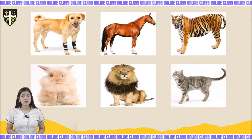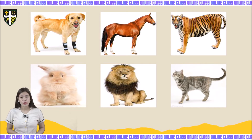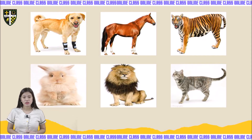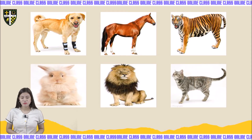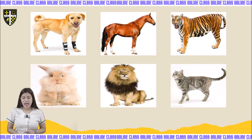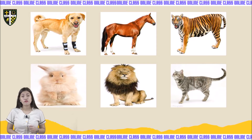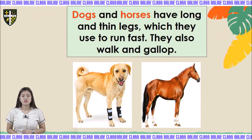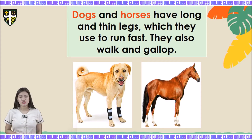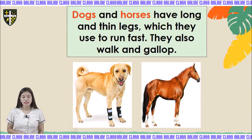Here we have different kinds of animals: dog, horse, tiger, rabbit, lion, and cat. Look at the pictures — can you describe the legs of these animals? Exactly, they have four legs. Where do these animals walk? Of course they walk on land. Dogs and horses have long and thin legs which they use to run fast, walk, and follow.